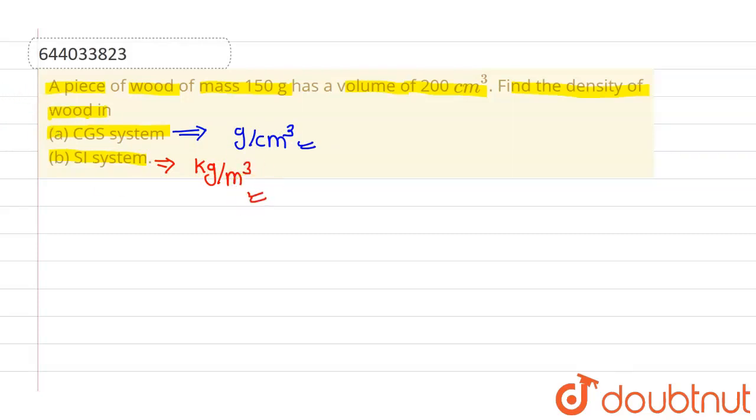Now, the given mass of wood is 150 grams, and the given volume of wood is 200 centimeter cube. We know a relation between mass, density, and volume: density equals mass over volume.